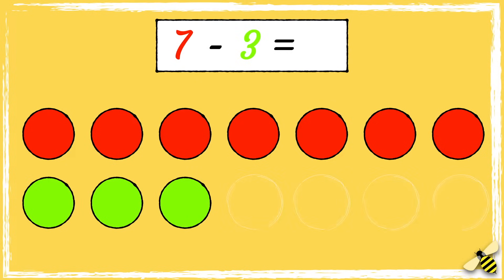Here is the difference between the two numbers. One, two, three, four. So the difference between seven and three is four.